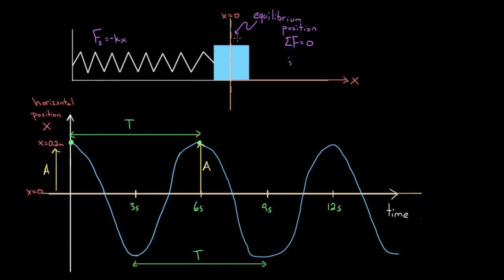If you're gonna fully reset, you gotta go from mass heading to the left through equilibrium all the way back to mass heading to the left through equilibrium — from this equilibrium point all the way to that equilibrium point — to have a full cycle.